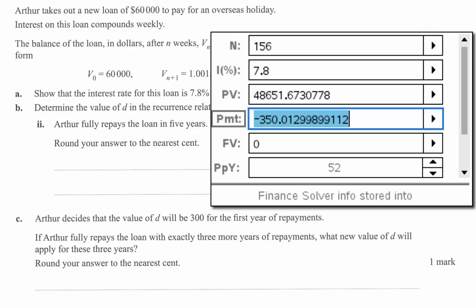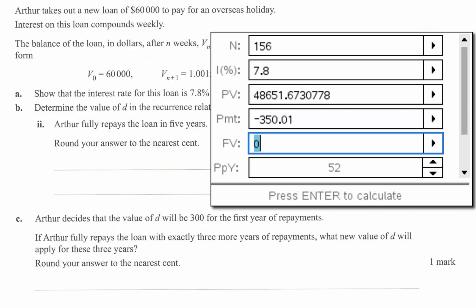So you might think because the question says round your answer to the nearest cent that the correct answer would be 350.01. But if Arthur pays 350.01 in those payments he's actually still going to owe 53 cents on the loan.